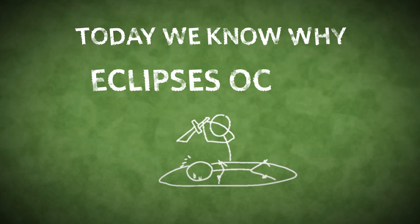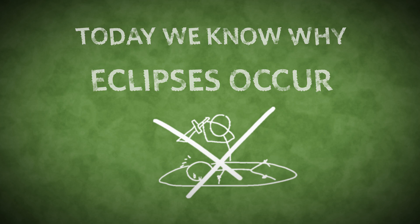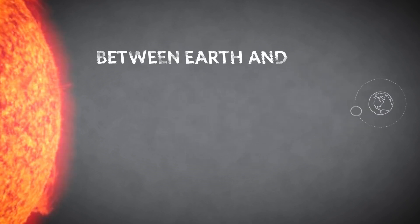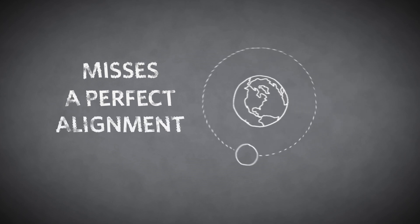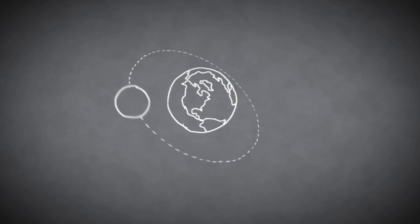Today, we know why eclipses occur, and that sacrifices aren't necessary. It all has to do with the moon's orbit around Earth. As the moon circles our planet, it passes between Earth and the sun about once a month. But it usually misses a perfect alignment because the moon's orbit is slightly tilted with respect to the plane of Earth's orbit around the sun.